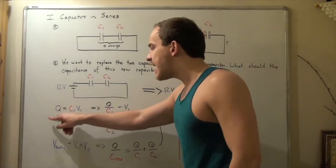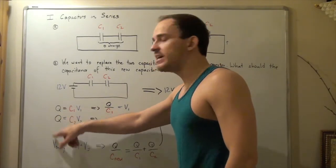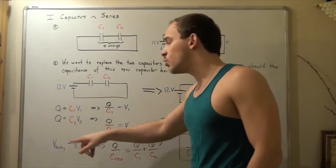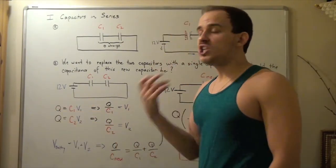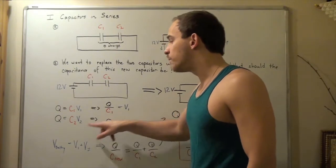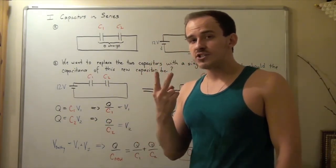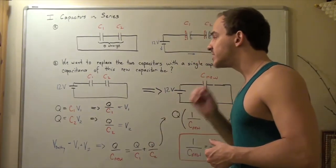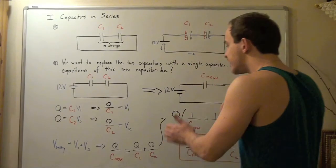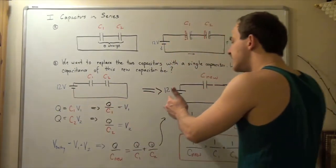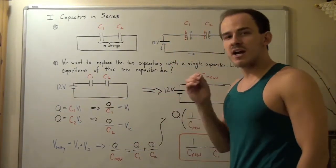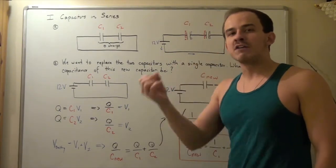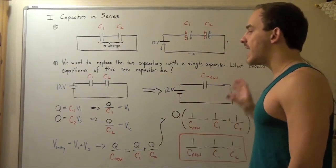The reason we want to combine C1 and C2 into C_nu is that with the original circuit we have only two equations but three unknowns: q, V1, and V2. We know C1 and C2, but we don't know q, V1, or V2. Mathematically, three unknowns and two equations is impossible to solve. So we want to go to a single-capacitor circuit so we have one equation with one unknown.